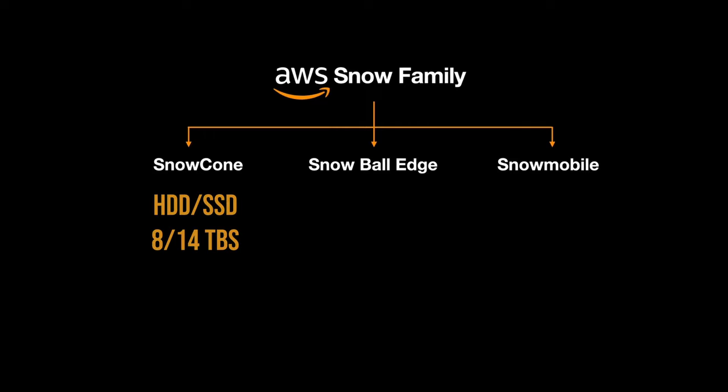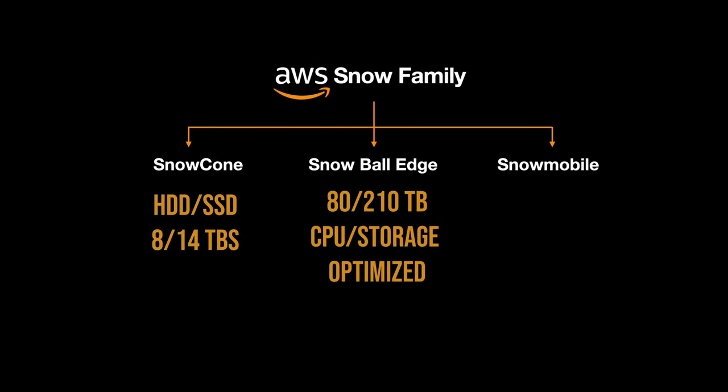Then comes AWS Snowball Edge, which comes in a range of 80 terabytes to 210 terabytes. It also comes in different variants — optimized for storage, optimized for compute, and a specific variant that has compute capabilities as well.